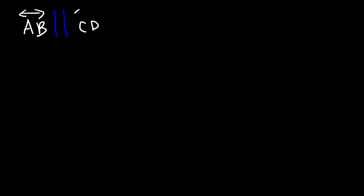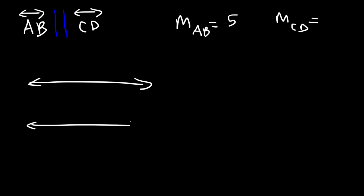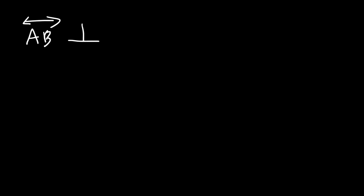In this video we're going to focus on calculating slope, especially as it relates to geometry. Let's say that line AB is parallel to line CD. Given this information, if the slope of line AB is 5, what is the slope of line CD? What you need to know about parallel lines is that parallel lines have the same slope, so line CD will have a slope of 5.